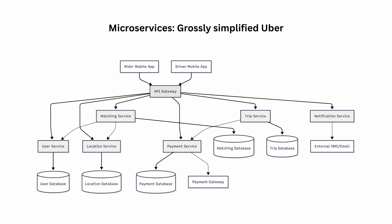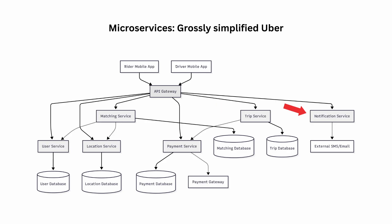This shows how Uber's app actually works behind the scenes. When you request a ride, your app talks to Uber's API Gateway — think of it as a front door. From there, it splits into separate microservices: the user service handles your profile, the location service tracks where you are, the matching service finds nearby drivers, the trip service manages your ride details, the payment service processes your card, and a notification service sends you updates. Each service has its own database and can be updated independently. If the payment system slows down, you can still see nearby drivers, and updating location tracking doesn't affect billing.